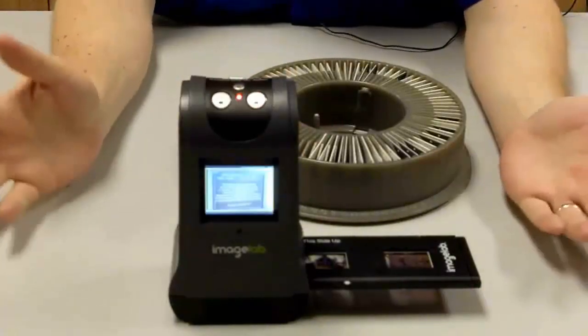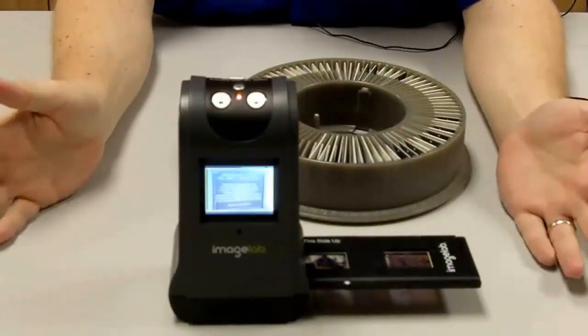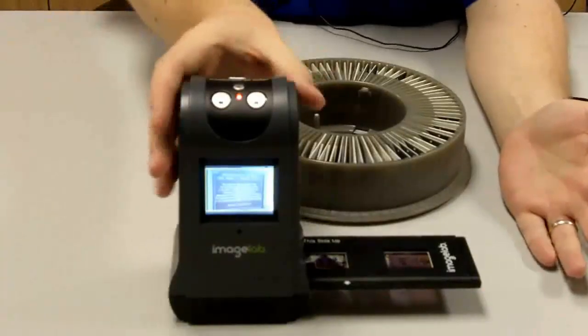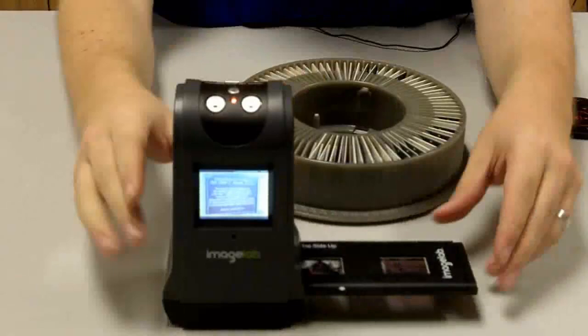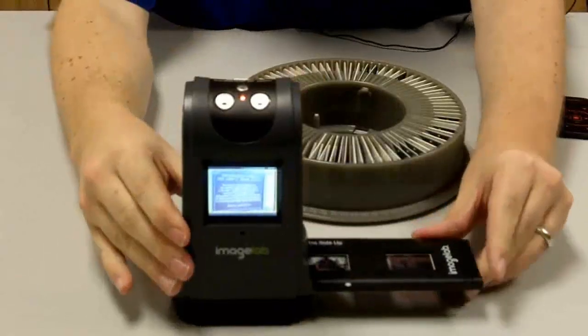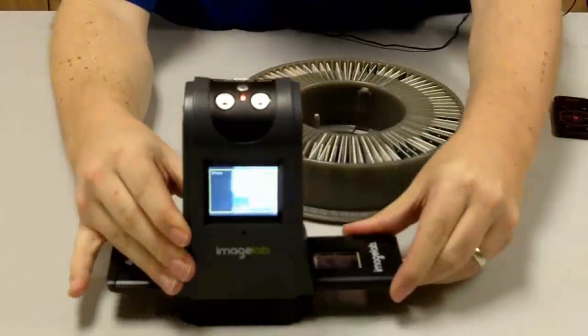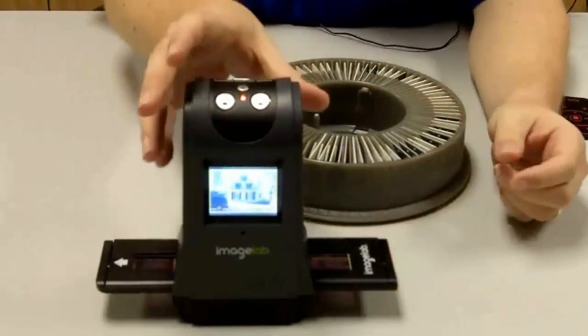And it basically takes a picture of the slide. And then once it's done, as I'm sure it is by now, yep, it returns you back to the screen with the little yellow border on it. And then you would just shove the slide cartridge in a little bit further, clicks in the position for the next one.